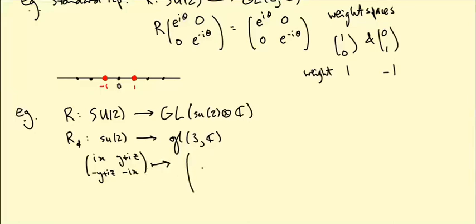It sent i x, y plus i z, minus y plus i z, minus i x to a three by three matrix, which was zero minus two z, two y, two z zero minus two x, minus two y, two x zero.